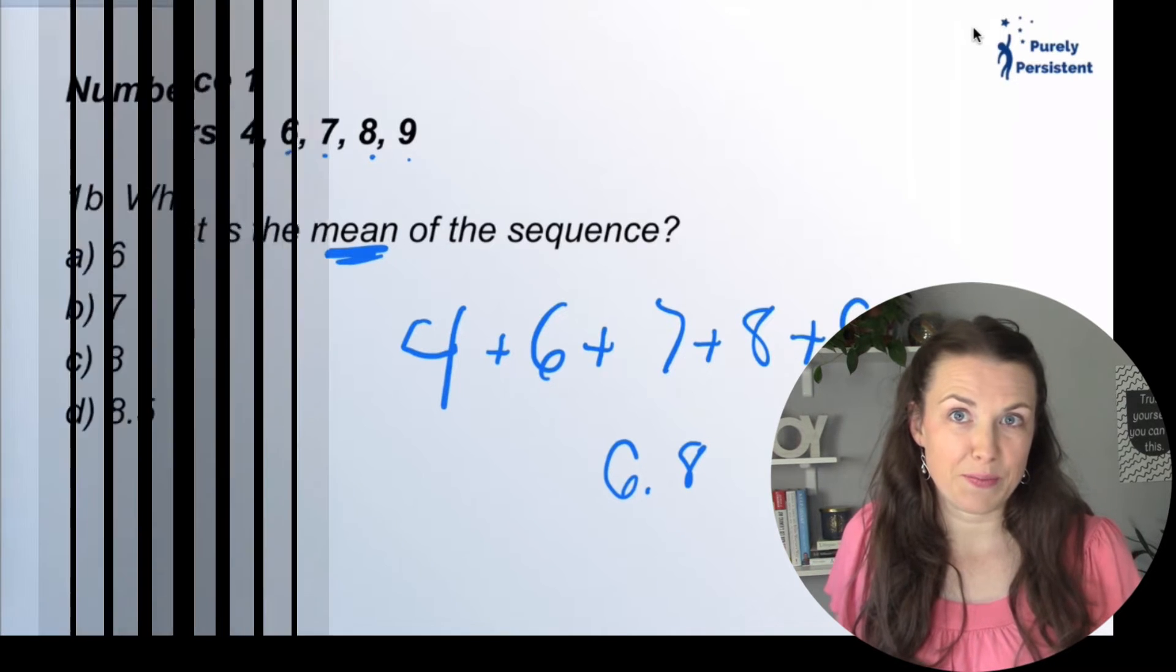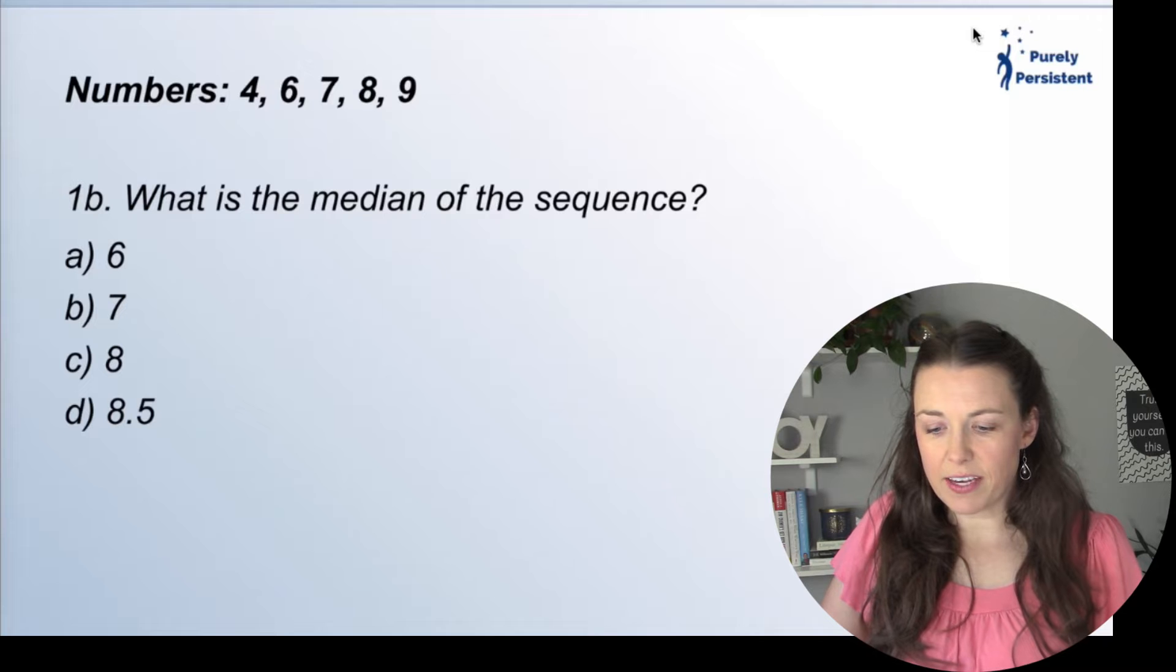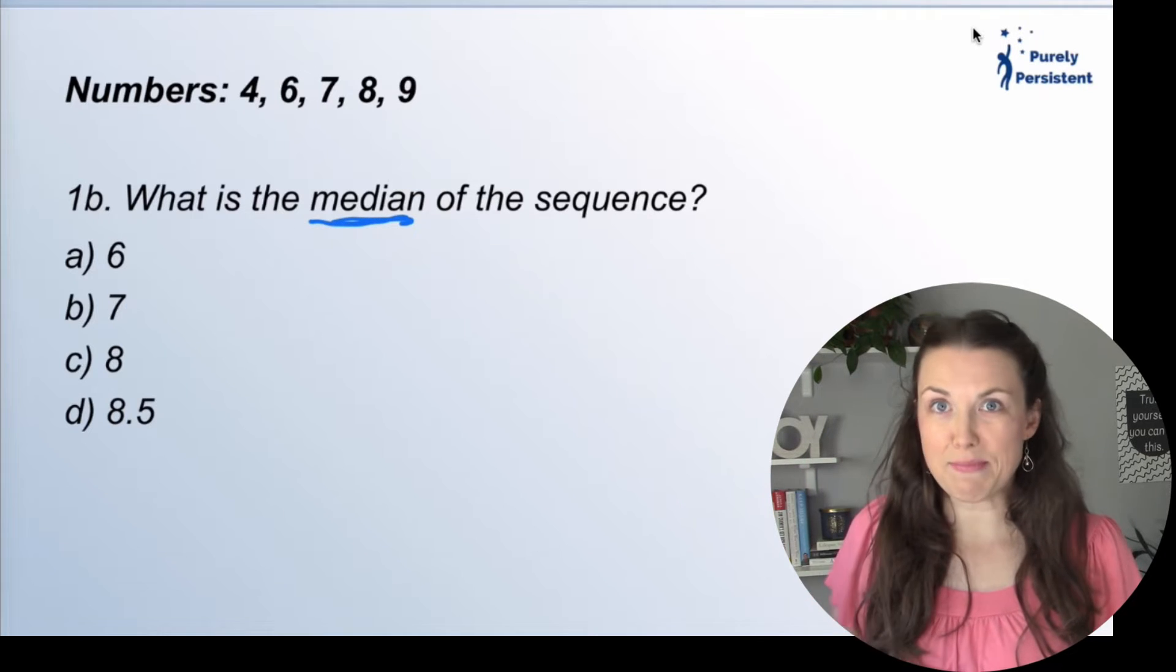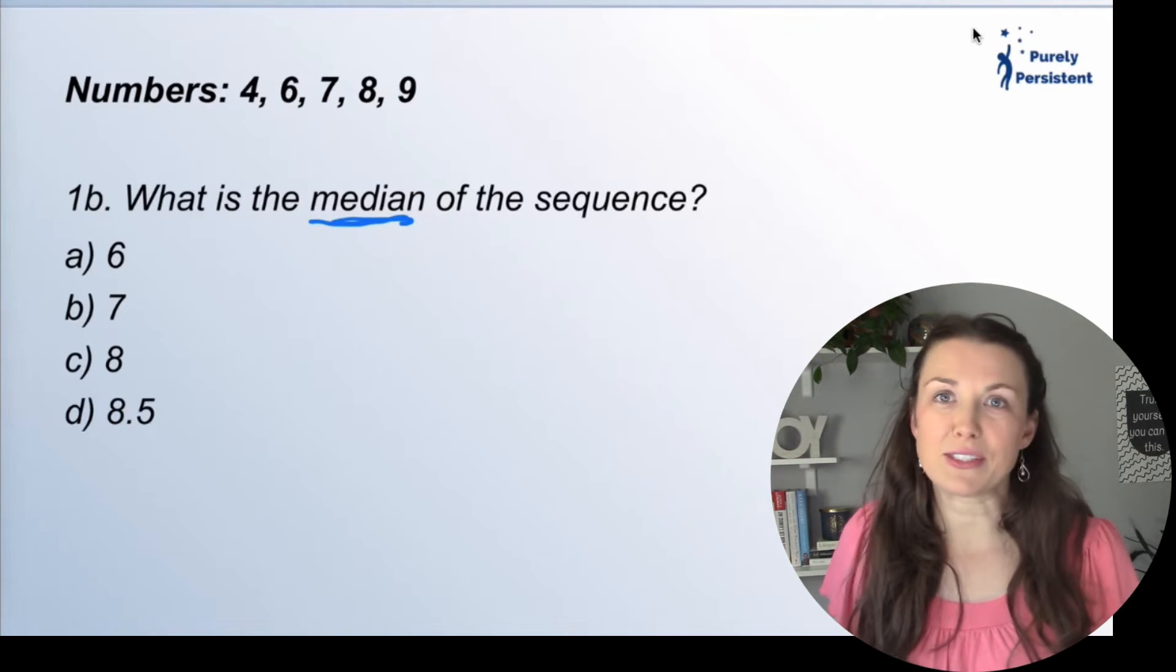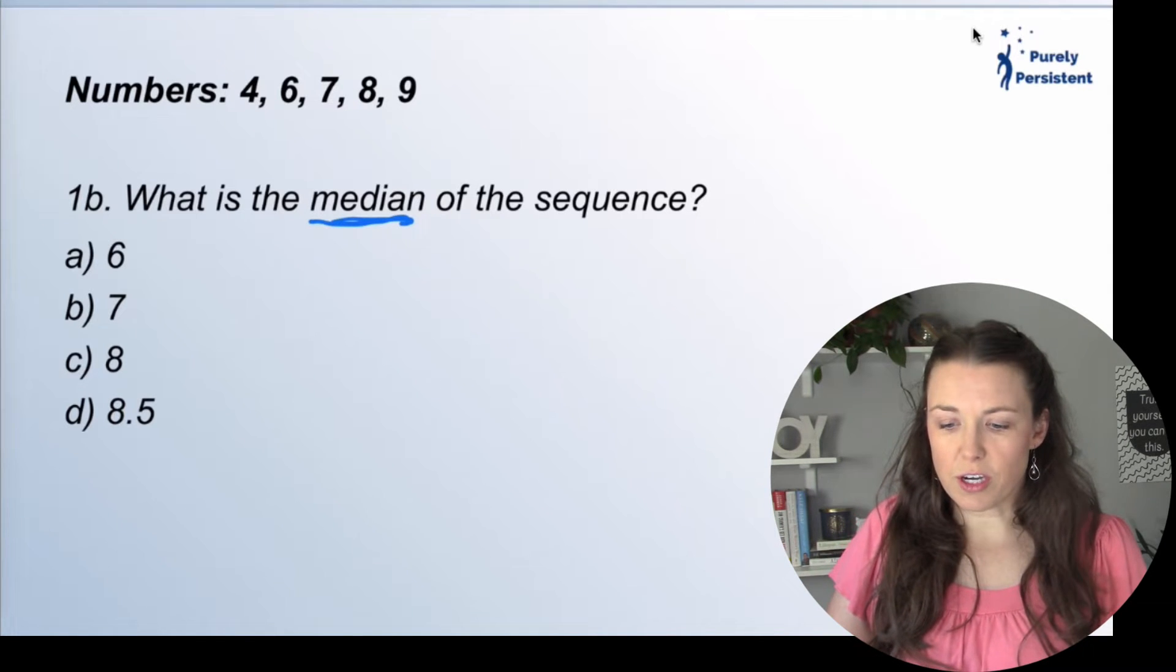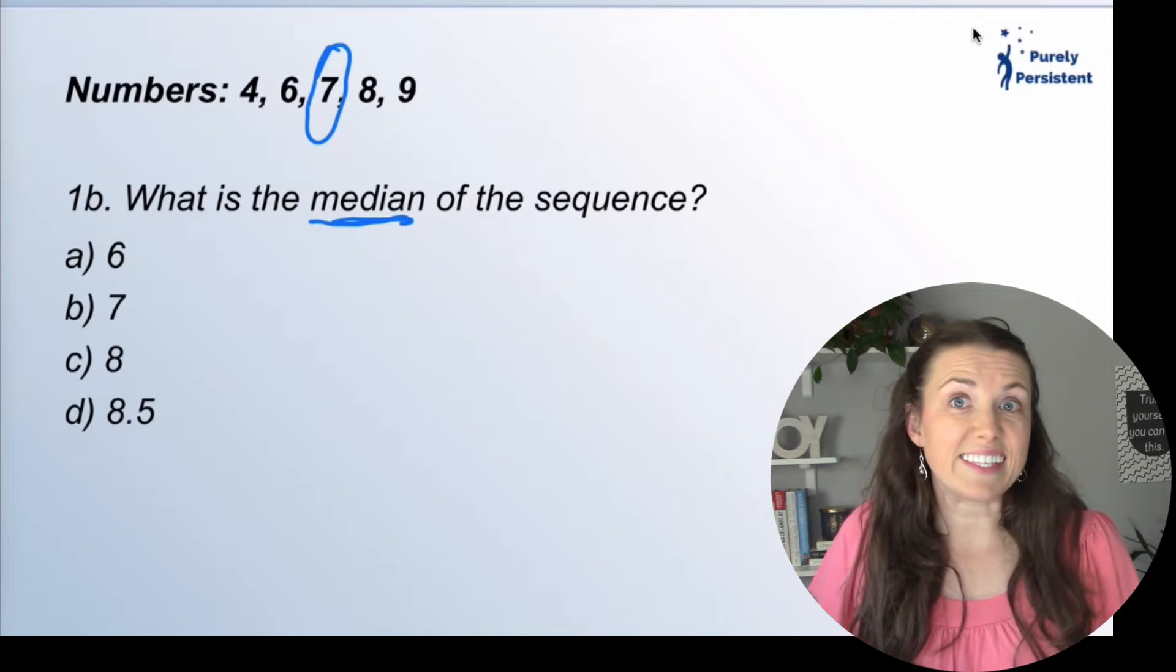I have the same sequence of numbers and this time I need to find out what the median is. So lucky for you and for me, I have all of my numbers in order from least to largest. So here starting with four to nine, the median is really just going to be that middle number, which is seven.